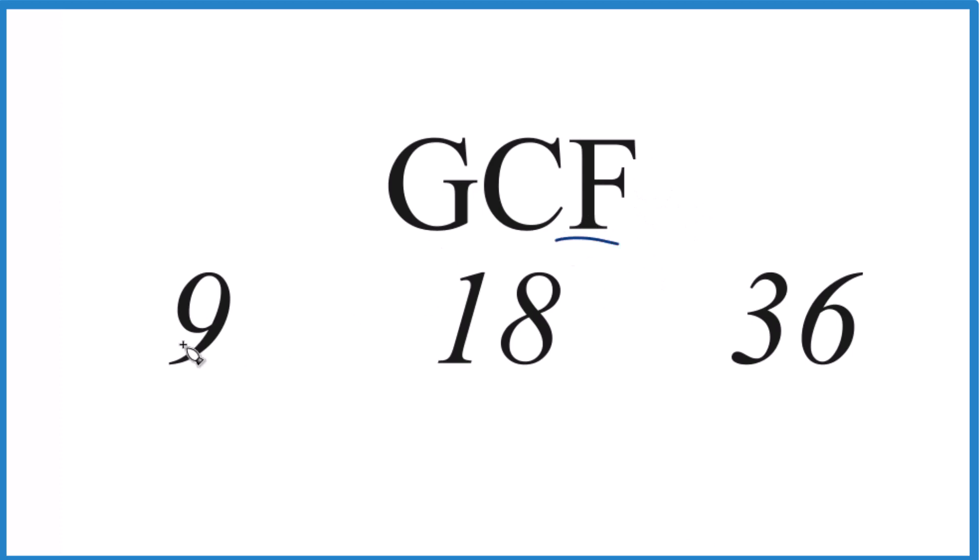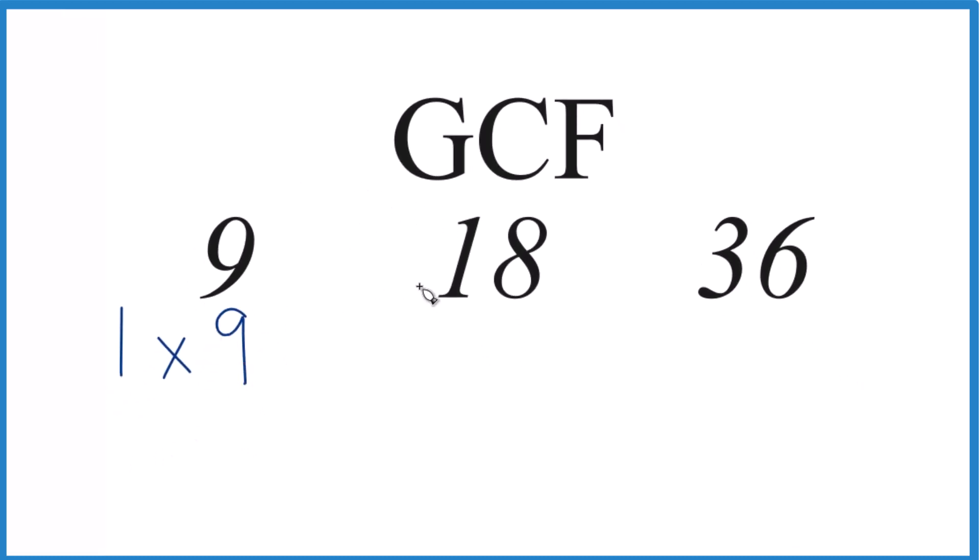So we're going to find the factors here of 9, 18, and 36, then we find which ones are in common and we just choose the greatest one. So the factors for 9, 1 times 9, and that's it, so that's 9. Oh, 3 times 3, don't forget that.